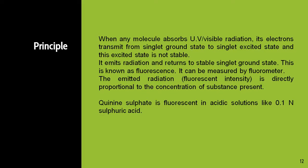Now let us see the principle of our practical. When any molecule absorbs UV-visible radiation, its electrons transmit from the singlet ground state to the singlet excited state, and obviously this excited state is not at all stable. Thus the electrons emit radiation and return to the stable singlet ground state, because any system has a tendency to return to the stable state. This is known as fluorescence. In fluorescence we can measure the emitted radiation, that is fluorescent intensity, with a fluorometer. Fluorescent intensity is directly proportional to the concentration of the substance — higher the concentration, higher the fluorescent intensity.